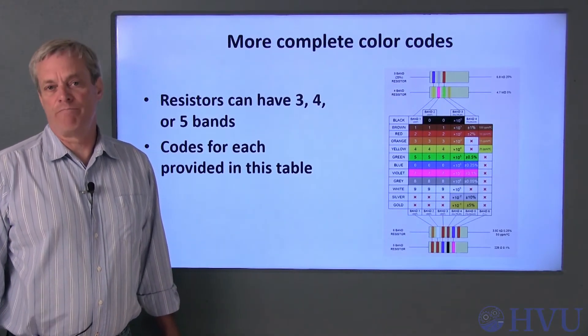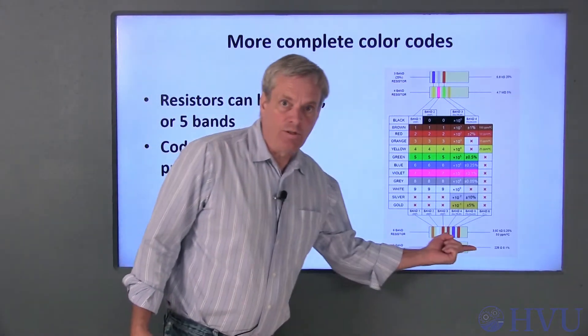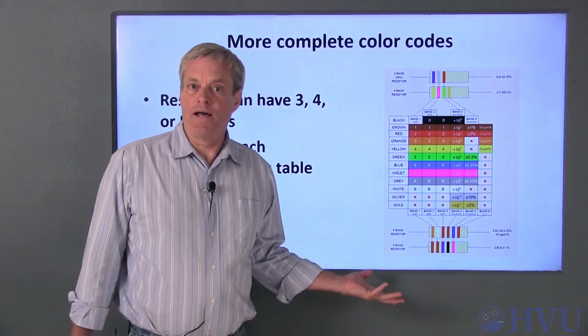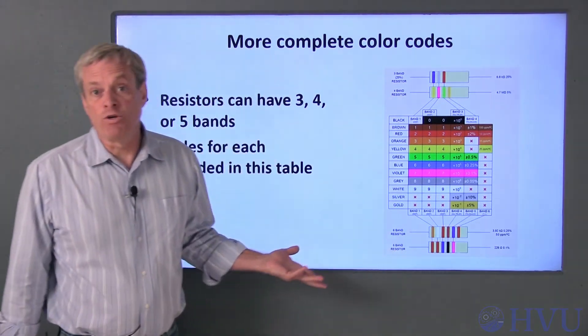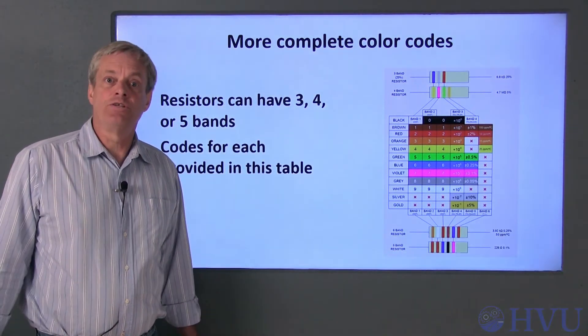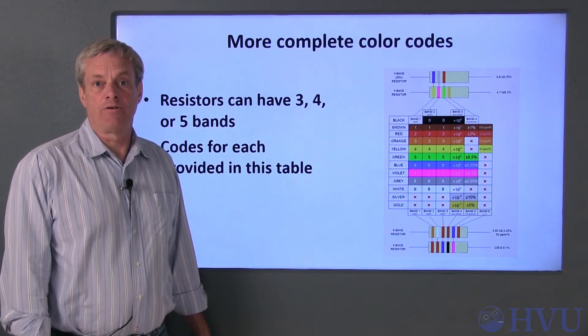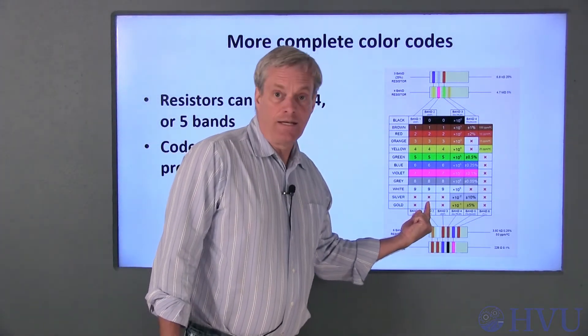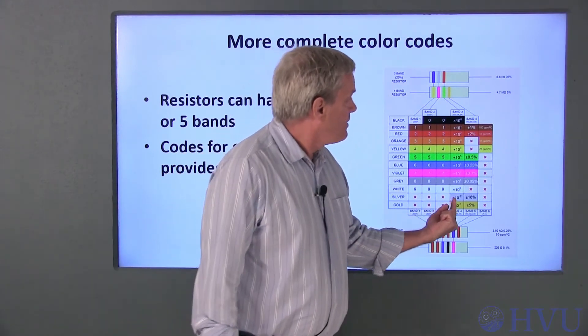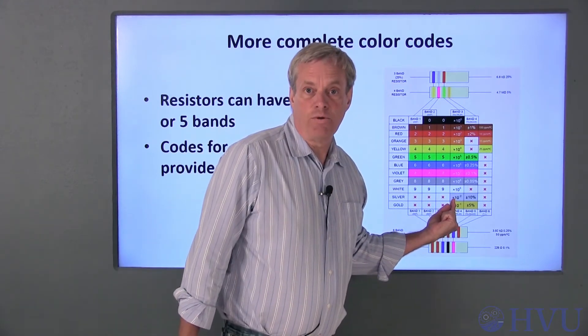As I mentioned previously, resistors can have various numbers of bands. This table provides coding for all possible variations. I won't spend time on this, since if you can read a 4 band resistor, you can use the table to read any of the other codes. For a 4 band resistor, the first and second columns of this table indicate the mantissa, and the 4th column gives the exponent.